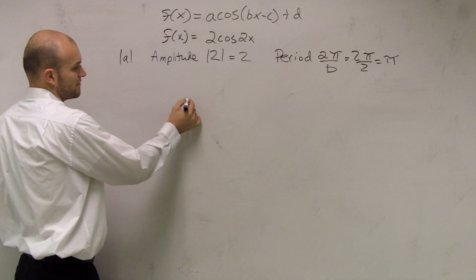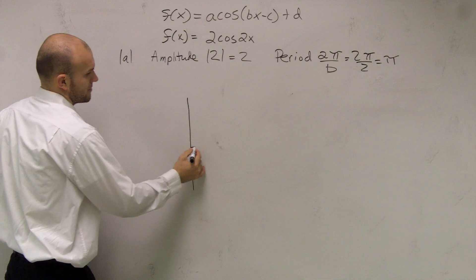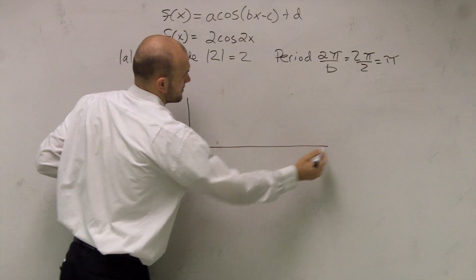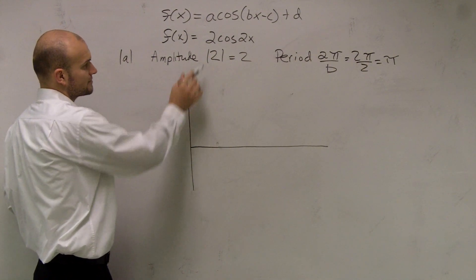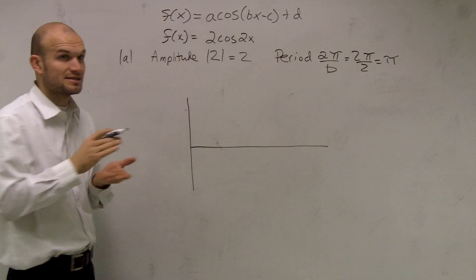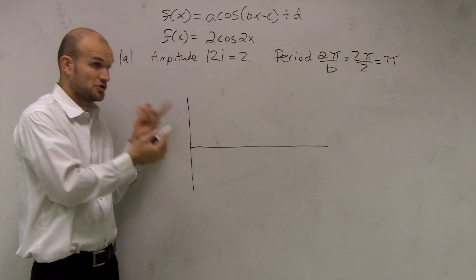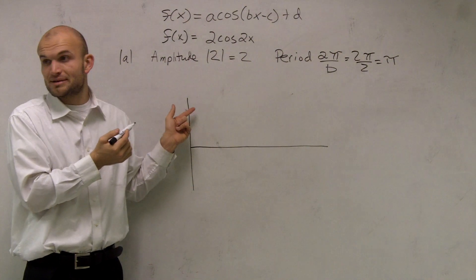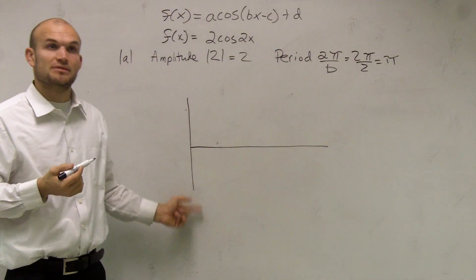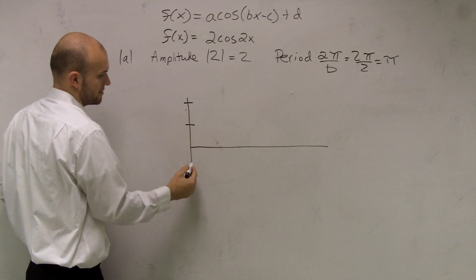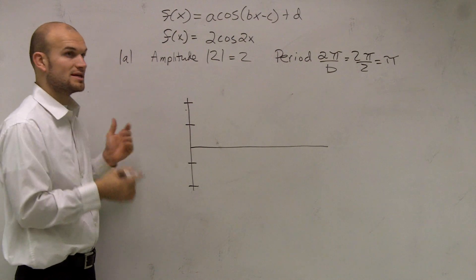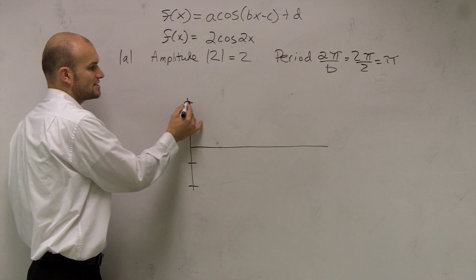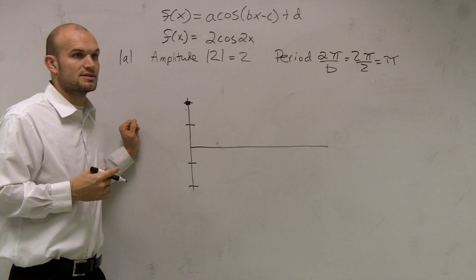So now we need to graph the cosine function. A couple things to remember about the cosine function: the amplitude is 2, meaning the distance from the X-axis to the maximum point is 2, and the distance from the X-axis to the minimum point is also 2. And remember, the cosine crosses at your Y-axis.